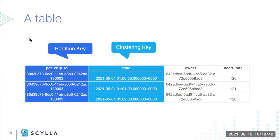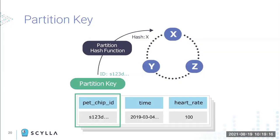The partition key is the most important aspect of data modeling. You define a collection of columns in your table as the partition key — in our example, just the pet chip ID, though it can be more than one column. There is a hash function in Scylla called the partitioner that takes this key, hashes it to a number, and uses that number to find which node should hold the data. Usually it's stored on three nodes due to replication.